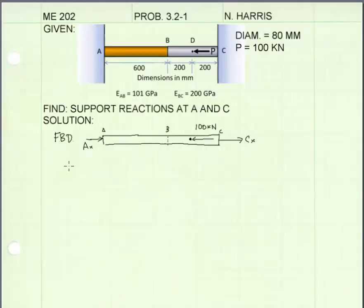I've begun by drawing a free body diagram. Now I will sum the forces in the x direction. Summing my forces gives me this expression: reaction Ax plus reaction Cx minus 100 kilonewtons equals zero. I'm going to call this equation 1, and we'll come back to it.